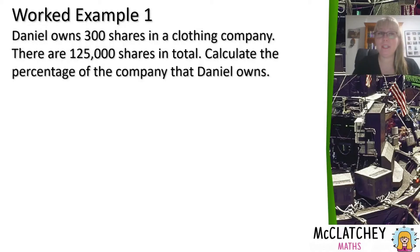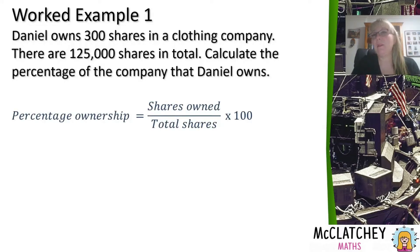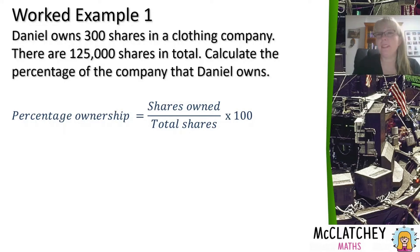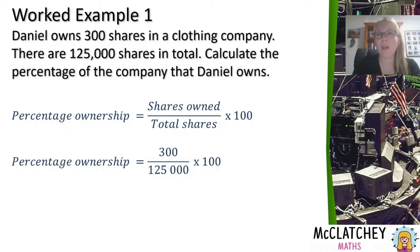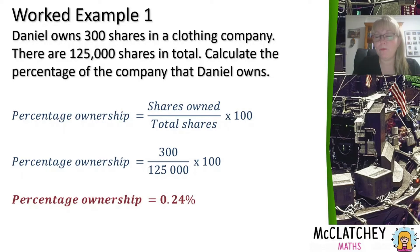In our first worked example, Daniel owns 300 shares in a clothing company. There are 125,000 shares in total. We need to calculate the percentage of the company that Daniel owns. The percentage he owns equals the number of shares he owns divided by the total number of shares, multiplied by 100. Substituting: 300 divided by 125,000 times 100 gives us a percentage ownership of 0.24% of the company — less than 1% of the whole clothing company.